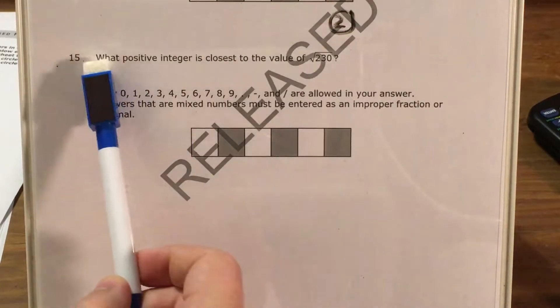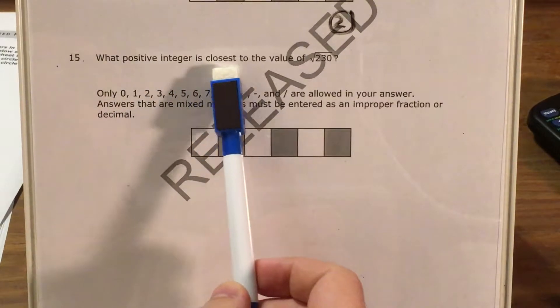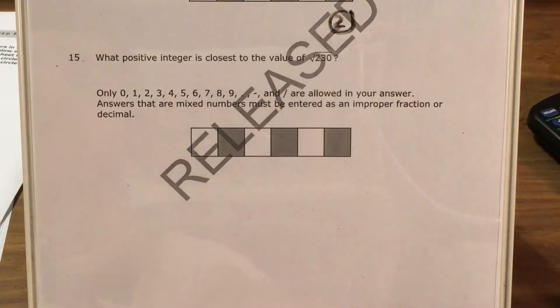As we can see, we're just being asked to find what positive integer is closest to the value of the square root of 230.